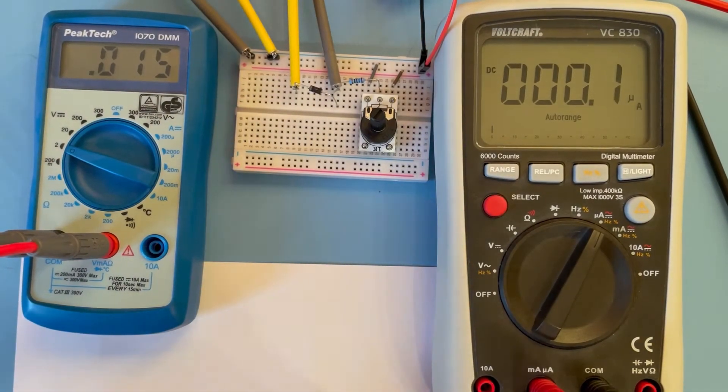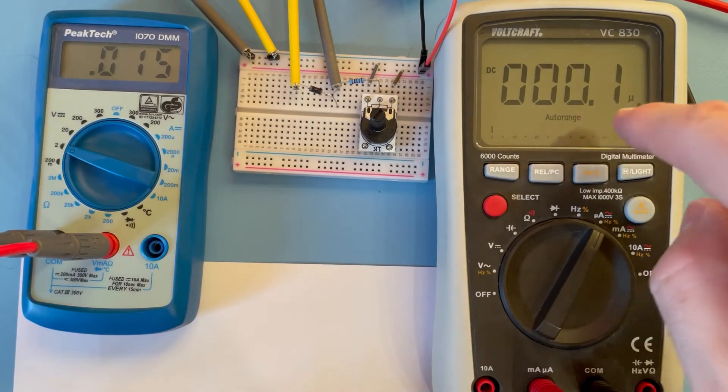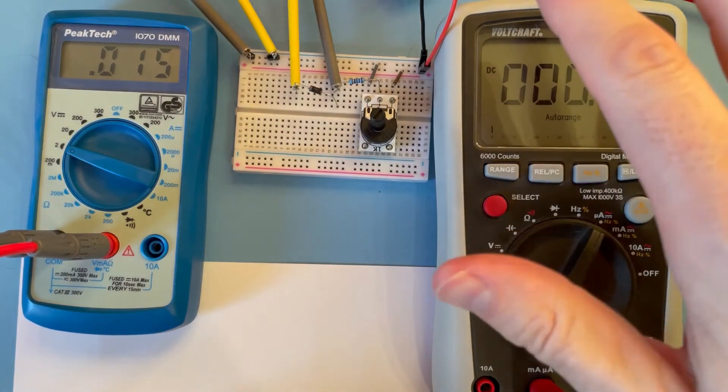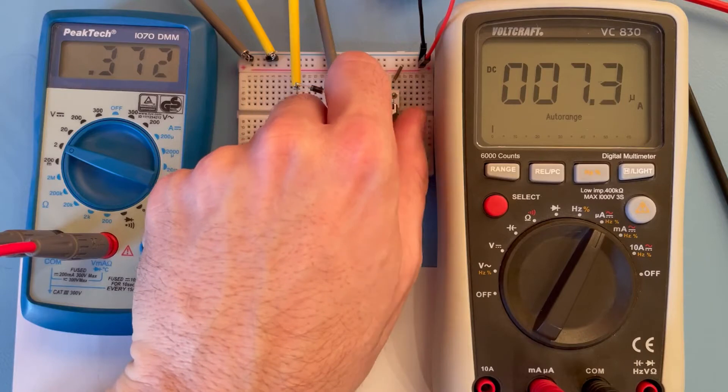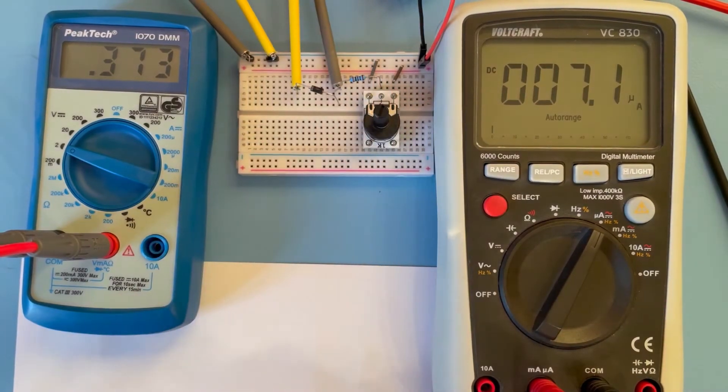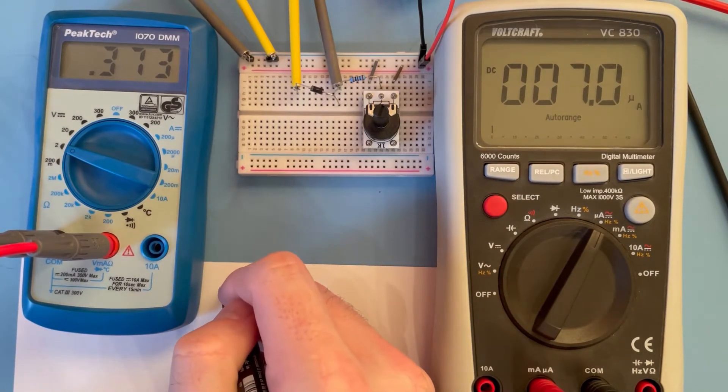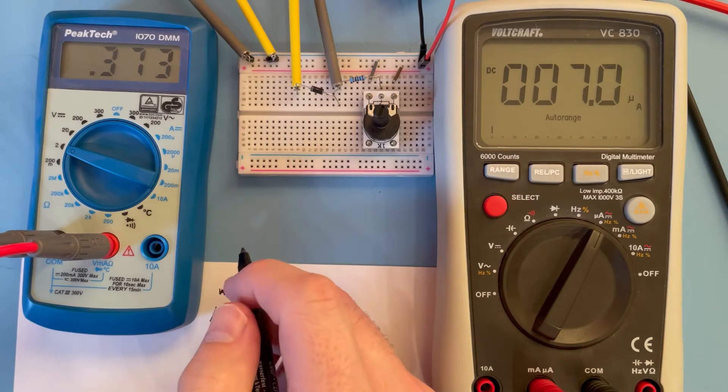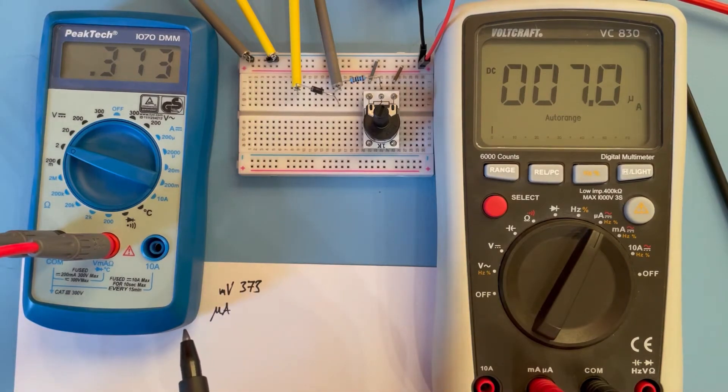I want to turn up the voltage with this potentiometer until we have some reasonable microampere value, because 0.1 or 0.2, sometimes flickering, is kind of multimeter offset, perhaps not relevant. So let's turn it up a little. This is a good first value. We have millivolts and on the lower scale we have microampere, so we have 373 millivolts and 7 microampere. First value.